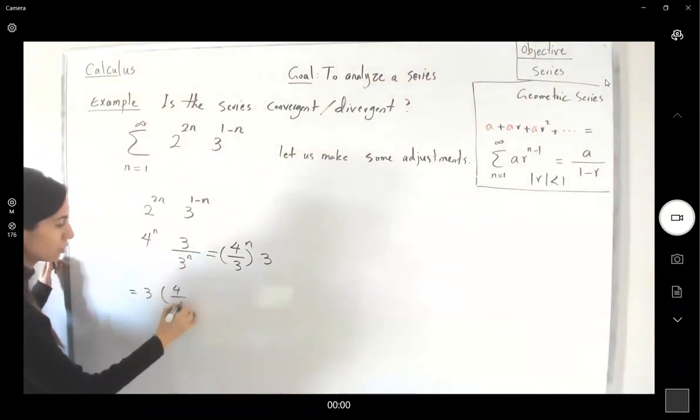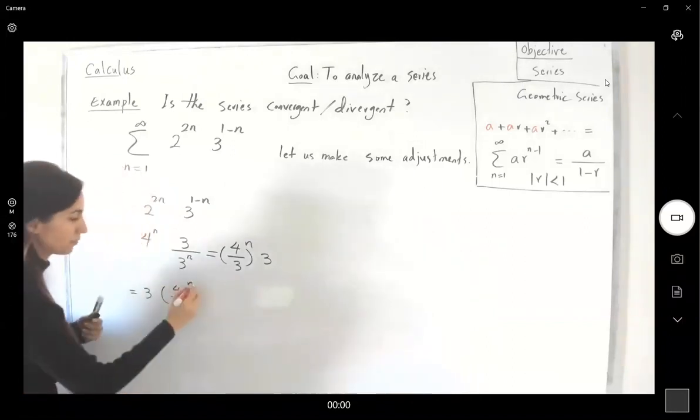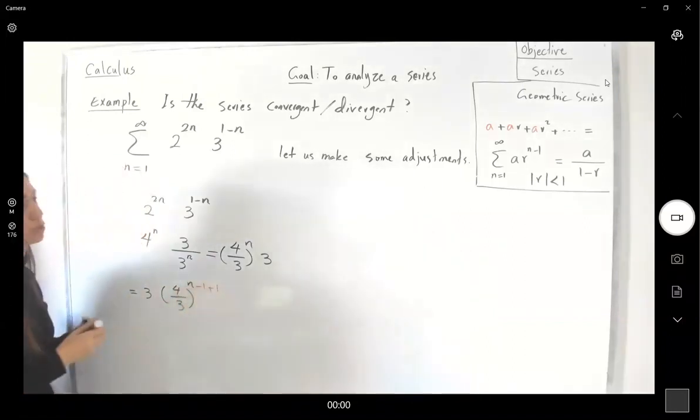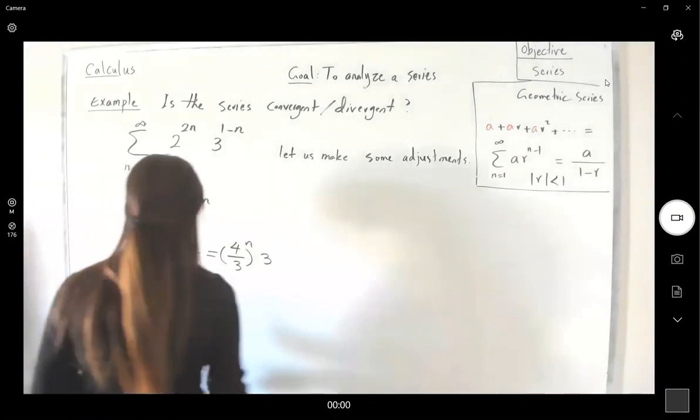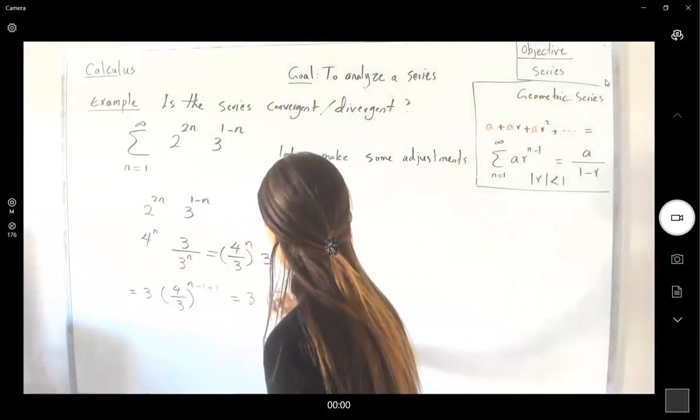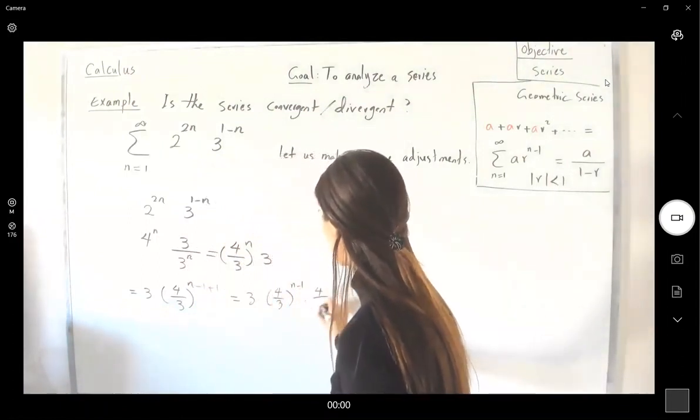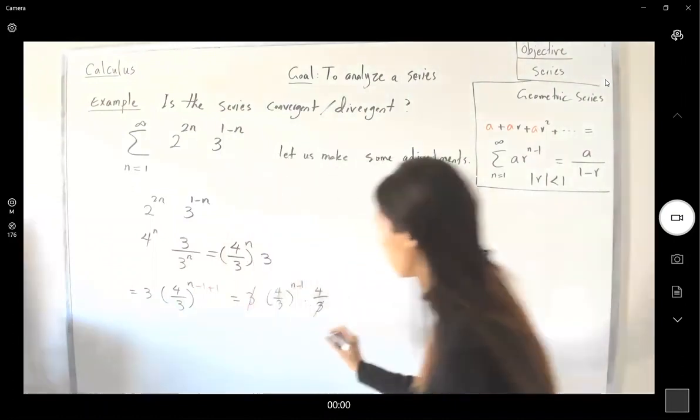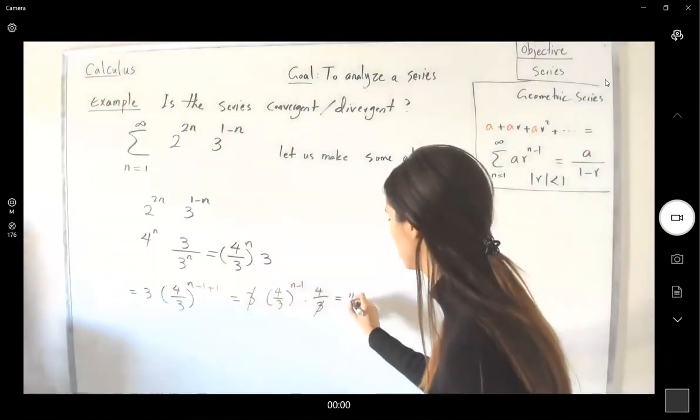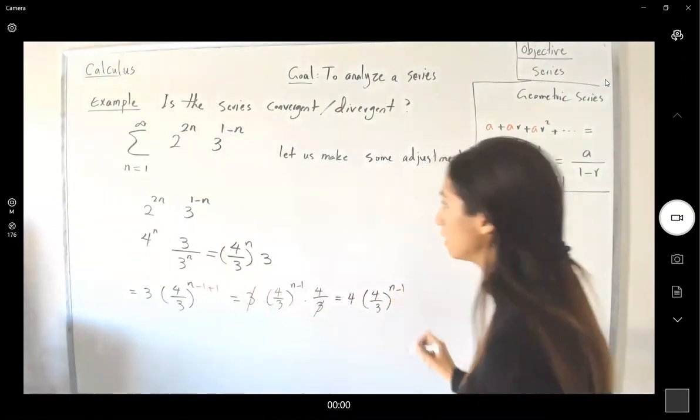(4/3) to the power n. I add and subtract 1 to create n minus 1. Here we go. This is equal to 3 times (4/3)^(n-1) times 4/3. You can cancel out 3 and 3. You get 4 times (4/3)^(n-1).